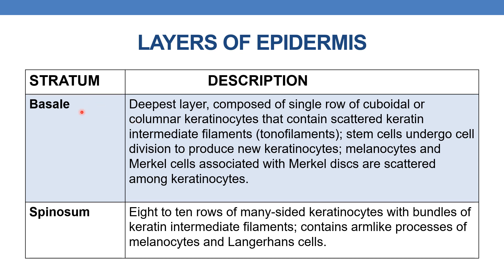The first layer is stratum basale, the deepest layer, composed of a single row of cuboidal or columnar keratinocytes that contain scattered keratin intermediate filaments. Stem cells undergo cell division to produce new keratinocytes. Melanocytes and Merkel cells associated with Merkel discs are scattered among the keratinocytes.